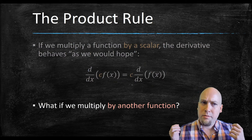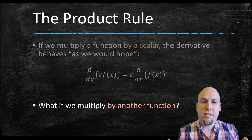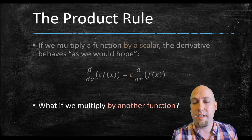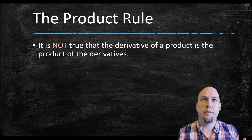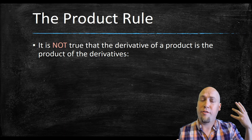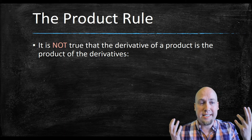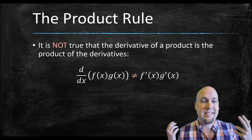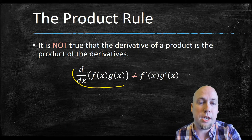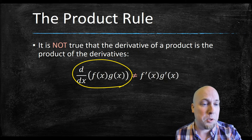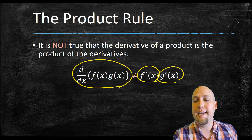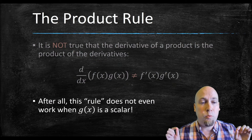But what if we multiply by another function instead of just a scalar — what if we multiply by a more exotic function? You probably have a first guess: maybe the derivative of a product equals the product of the derivatives, where you take the derivative of the first and multiply by the derivative of the second. But it turns out that's very, very wrong.